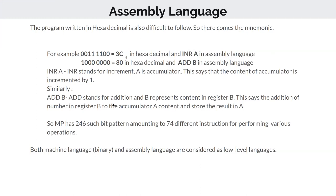Similarly, 'ADD B' means add the content of register B with the accumulator, and store the result back in the accumulator — because the accumulator is the default register for arithmetic operations. The hex code for this instruction is '80'. The 8085 microprocessor has 246 such bit patterns amounting to 74 different instructions for performing various operations.